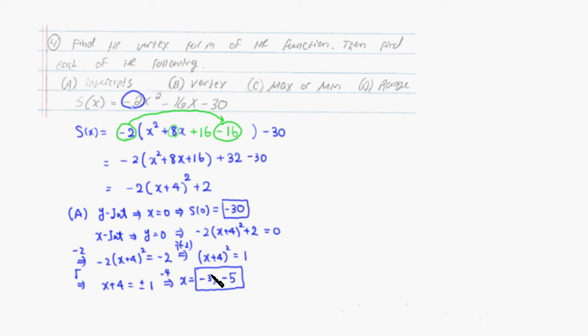Part B, vertex. So B, vertex would be, you can just look at the vertex form. Y coordinate comes from here, so it's a positive 2. Since positive 4 is actually shifting to the left by 4, so it's negative 4. So you have to negate this number to get the x coordinate. You get this number for the y coordinate. So that's the vertex.